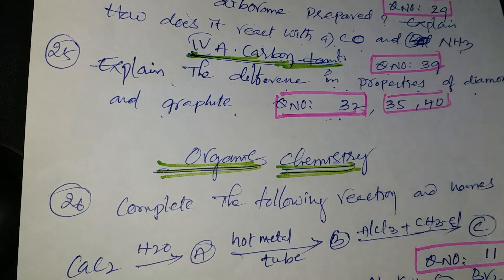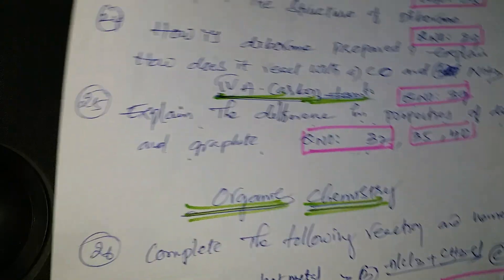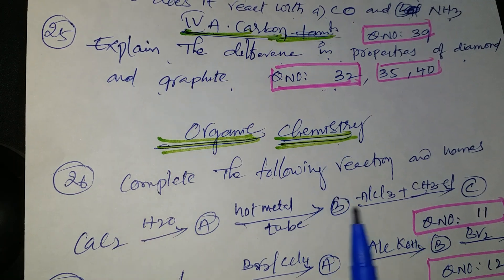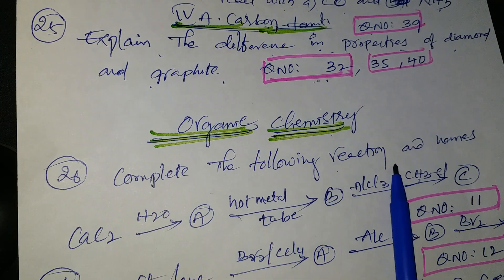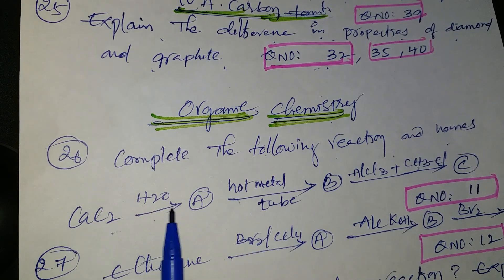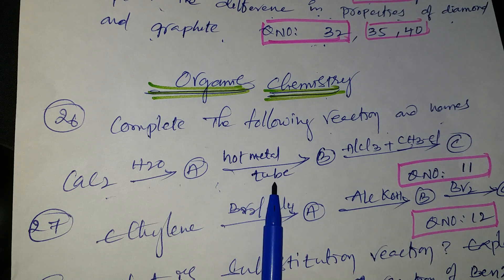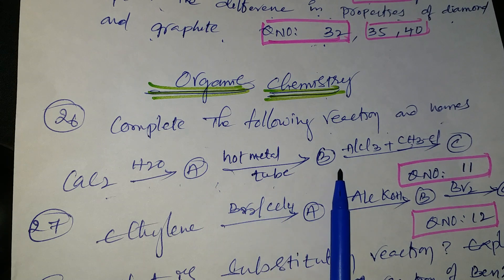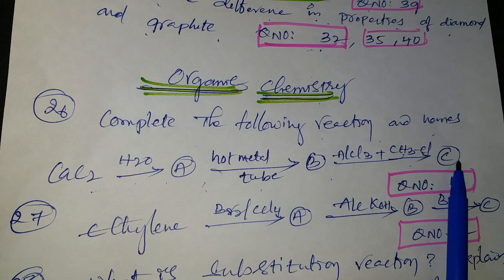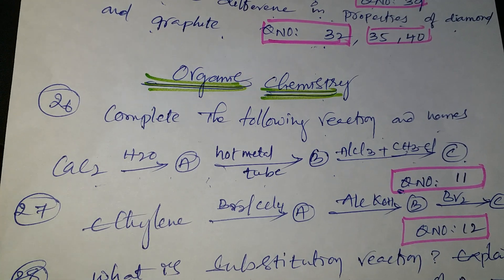Now, organic chemistry important questions. Complete the following reactions: CaC2 in the presence of water gives compound A; compound A reacts with hot metal to give compound B; compound B reacts with AlCl3 in the presence of CaCl2 to give compound C — question number 11.